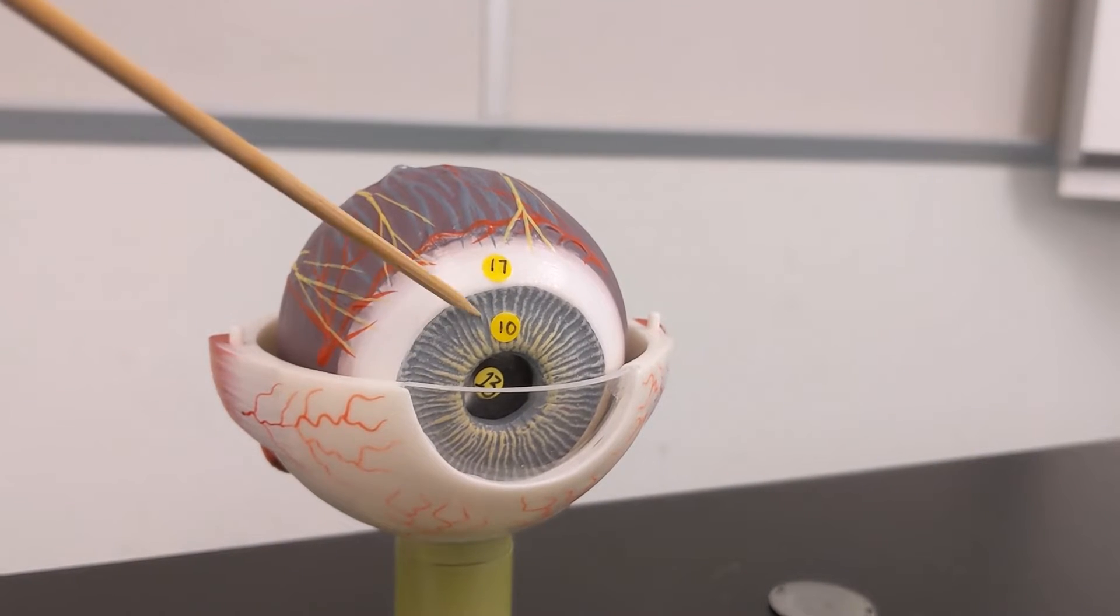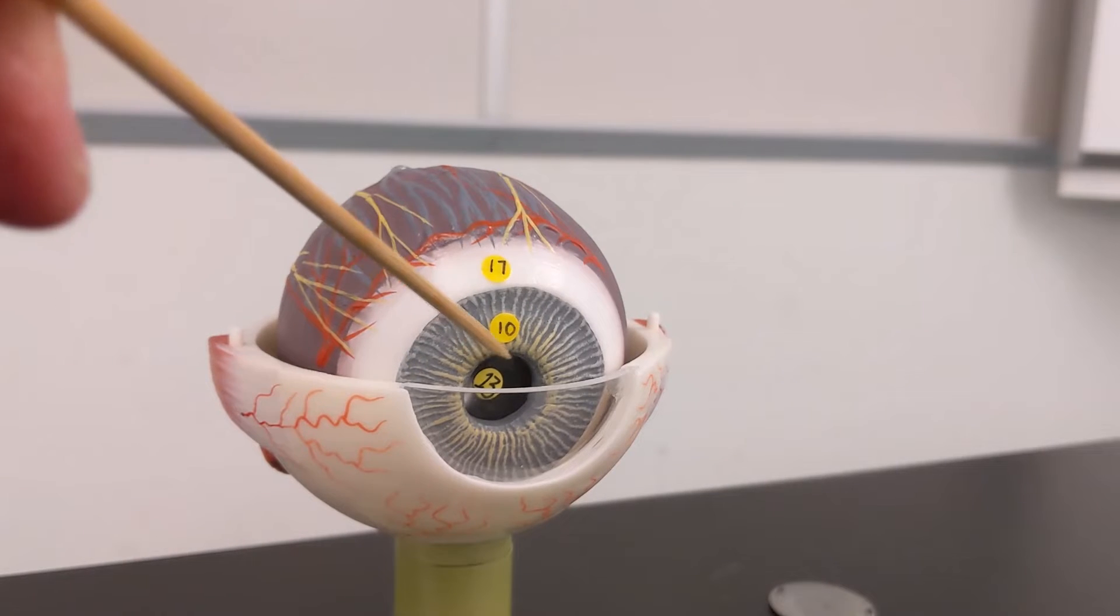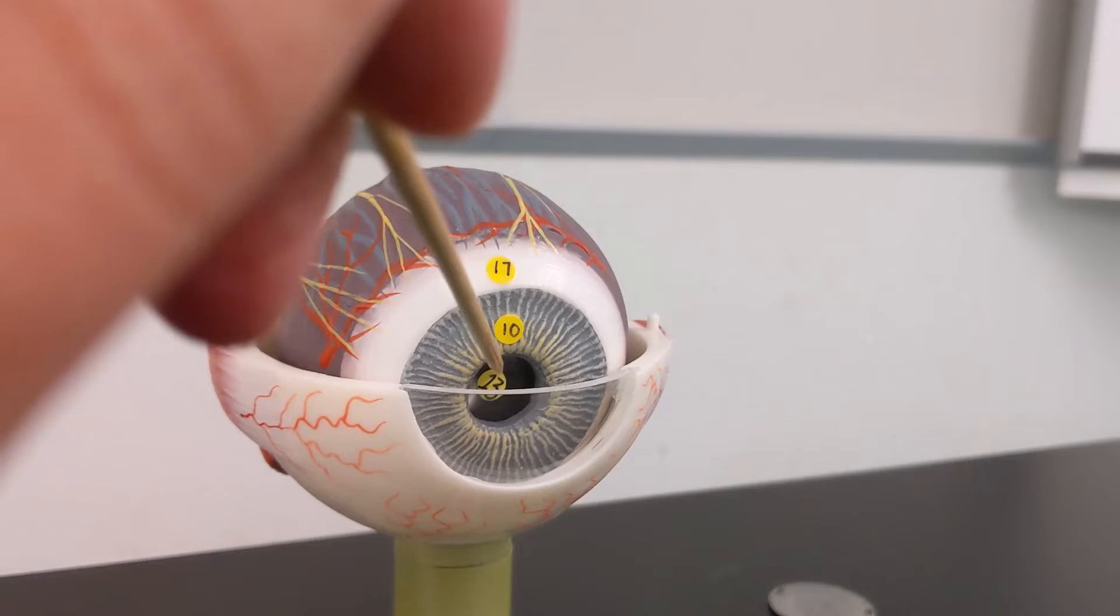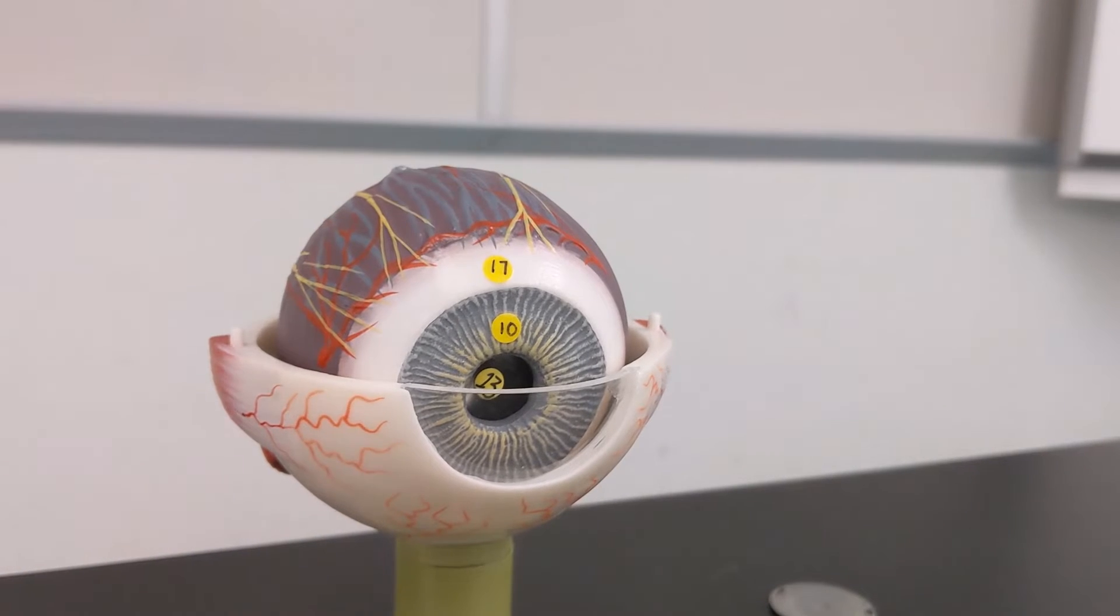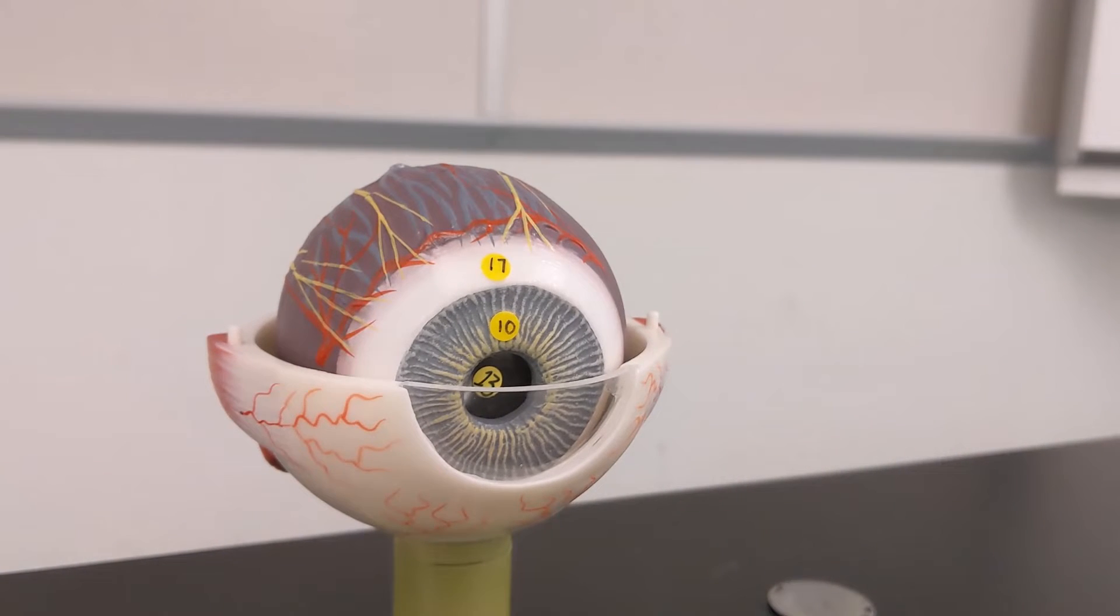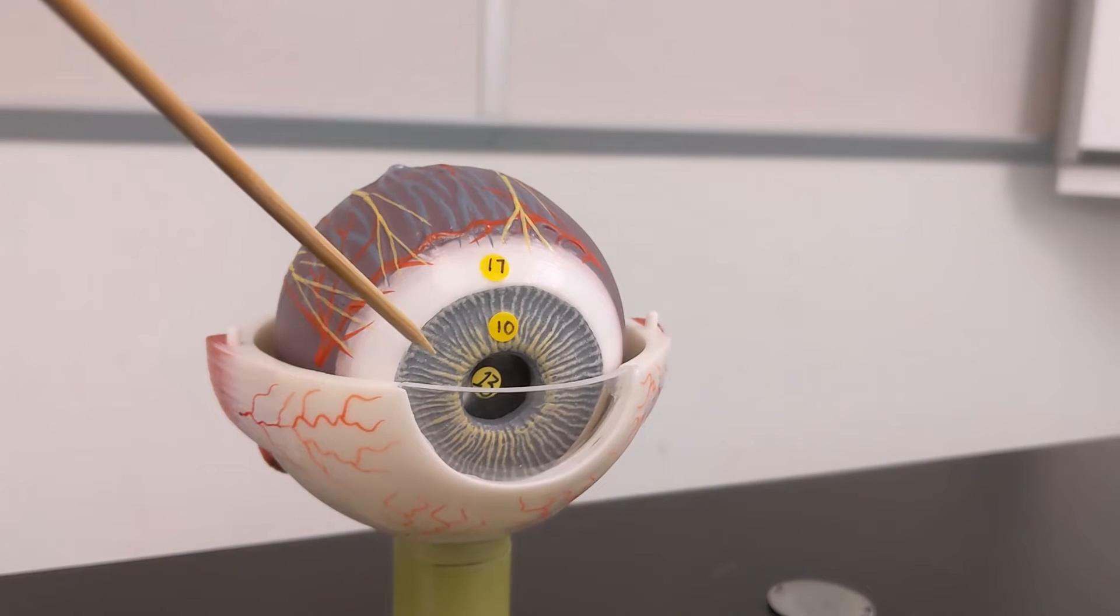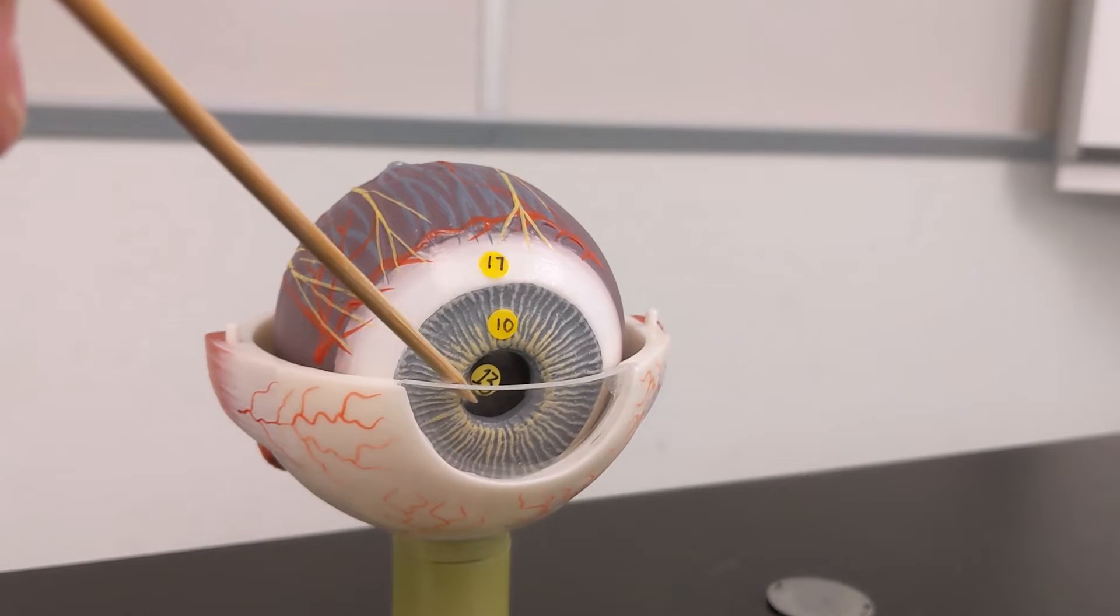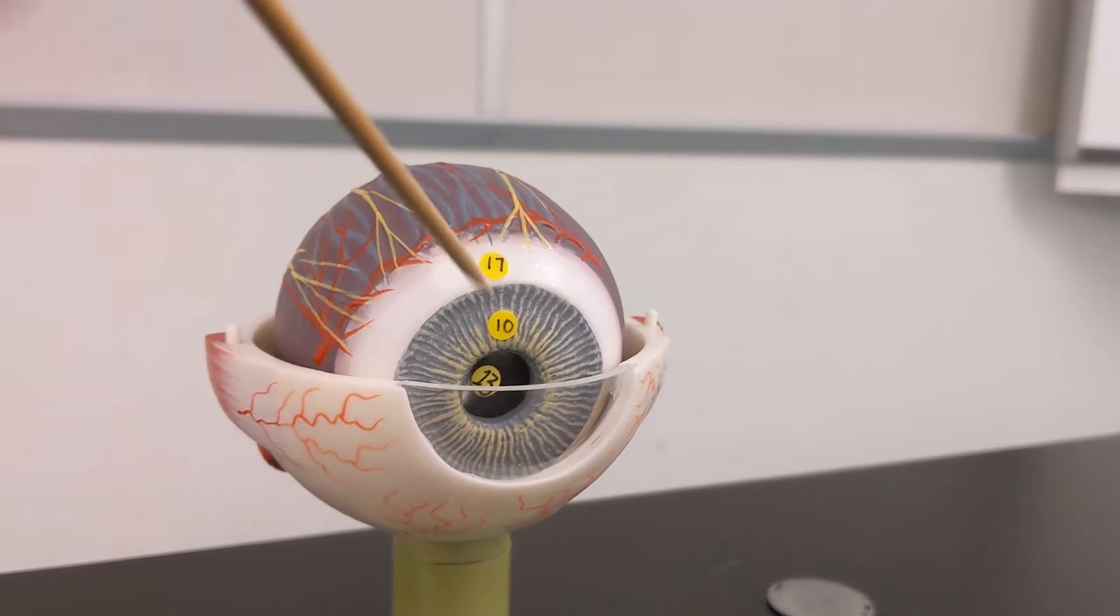What is the colored part of the eye and then the hole in the center and then behind the hole there's an actual structure. So the colored part is the iris, the hole is the pupil, and the piece behind the pupil is the lens.